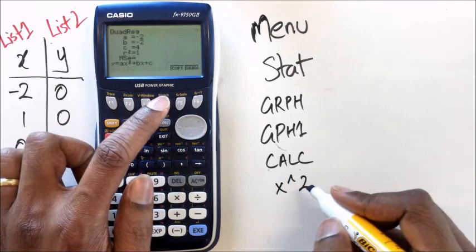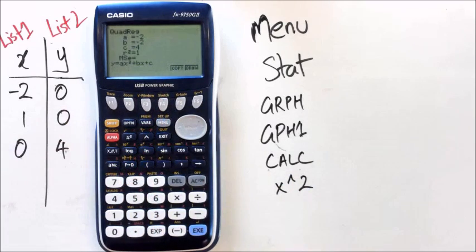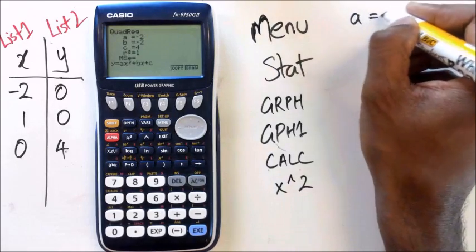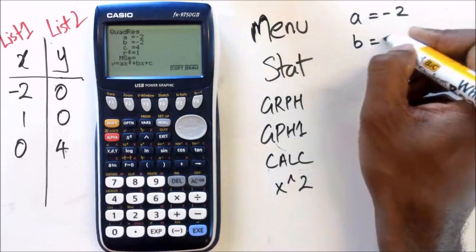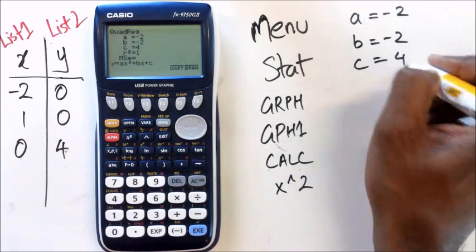Okay, so when you click that, you get your values for A, B, and C. So at the moment, you've got a value of A as negative 2, B equals negative 2, C equals to 4.